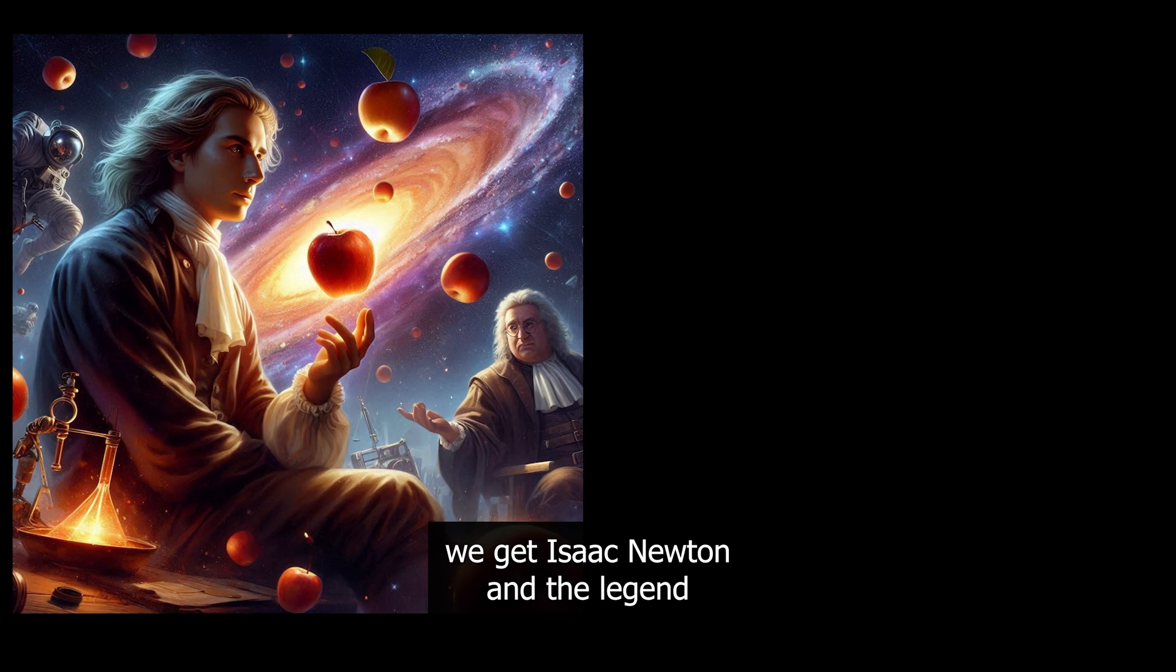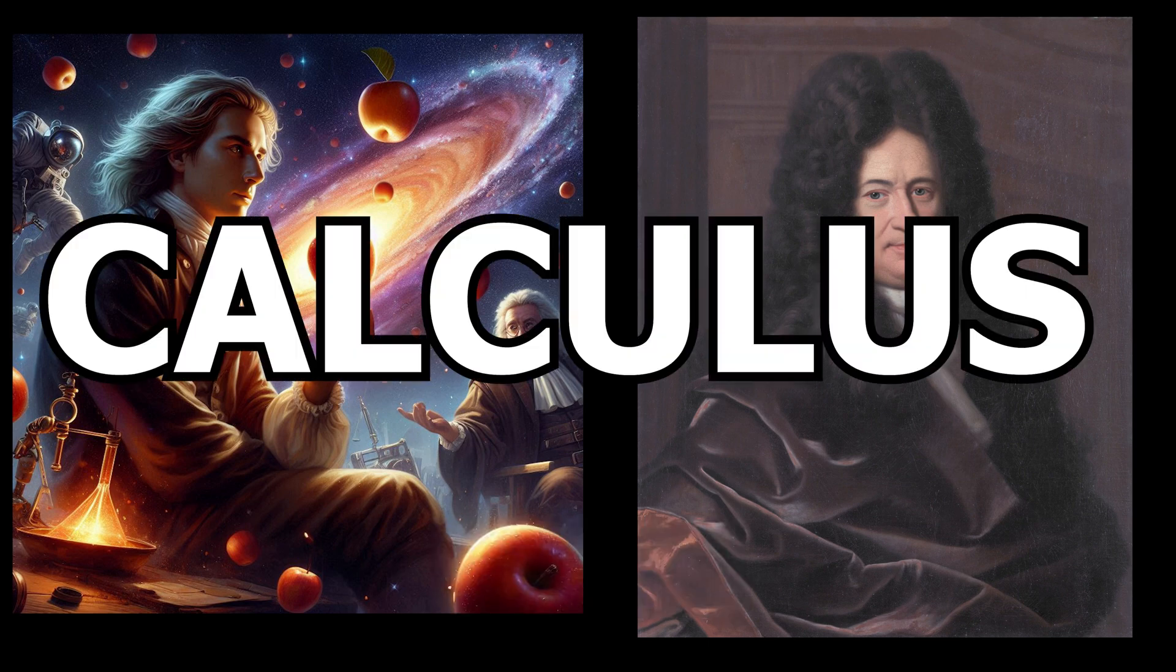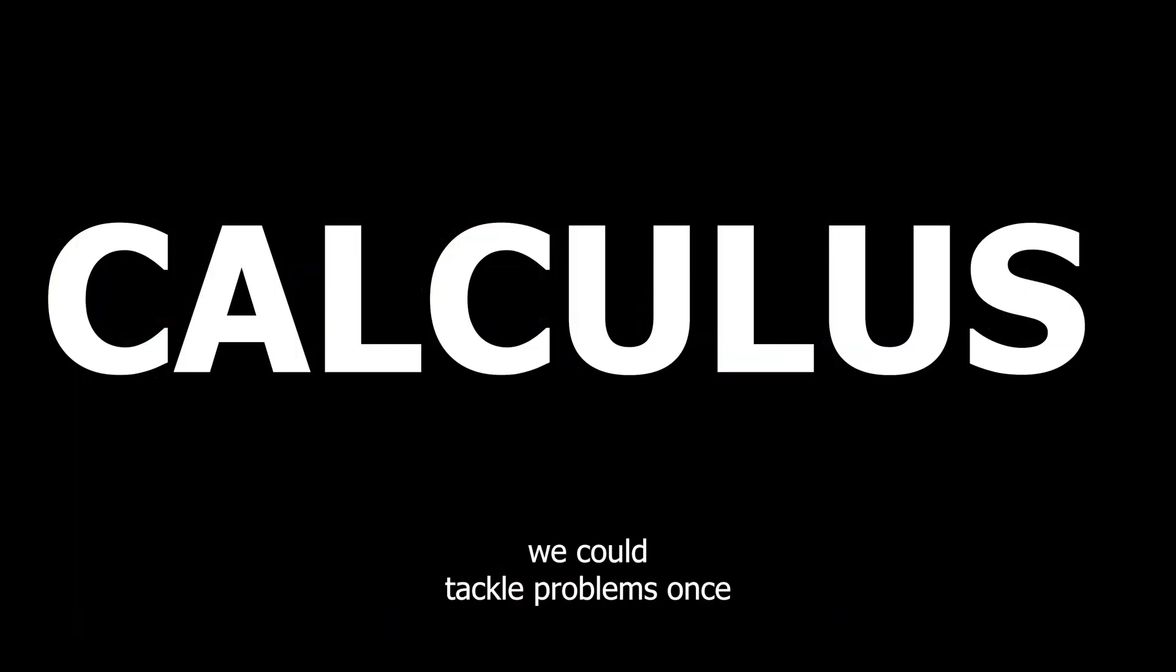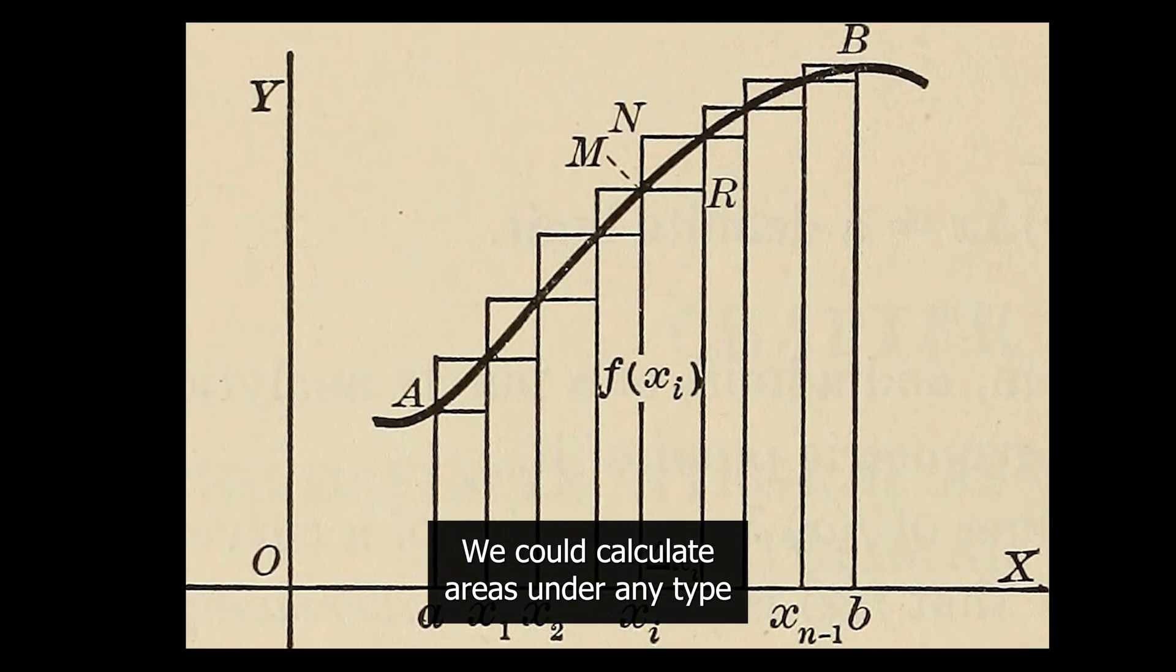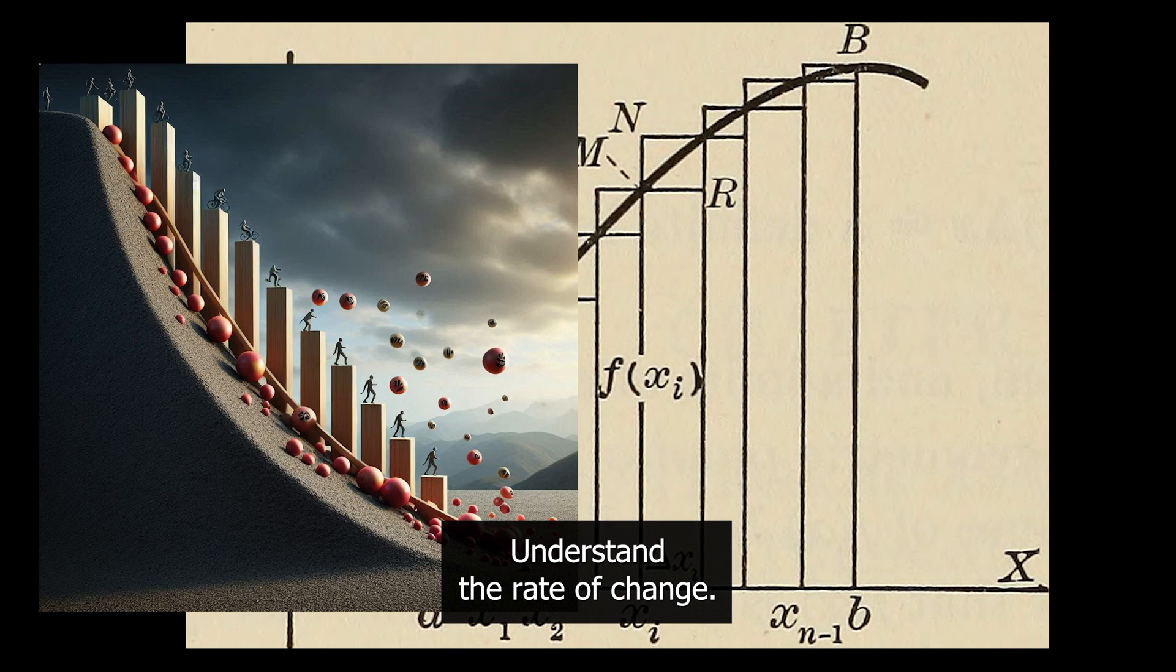Fast forward we get Isaac Newton and the legend of the falling apple. Together with Gottfried Wilhelm Leibniz, they independently developed one of the most important tools in modern math: calculus. With calculus, we could tackle problems once thought impossible. We could calculate areas under any type of curves and understand the rate of change.